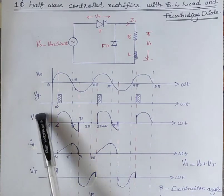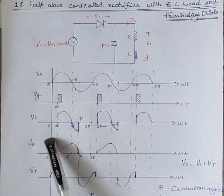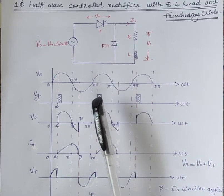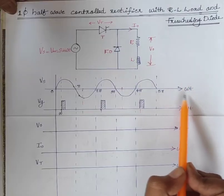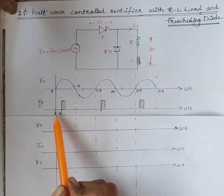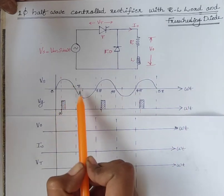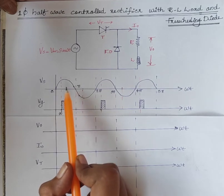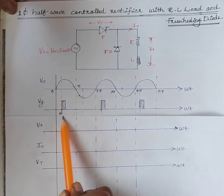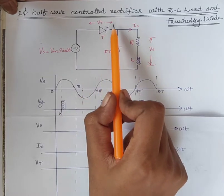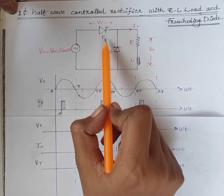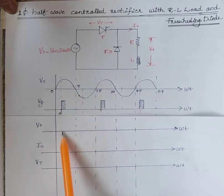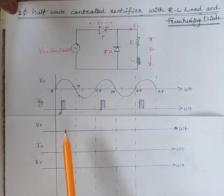Now we will see the waveforms of V0, I0, and Vt when the freewheeling diode is used. At omega t equal to 0, source voltage Vs is positive, and at some delay angle alpha, the SCR is forward biased and triggered, so the source voltage Vs appears across the load as V0.